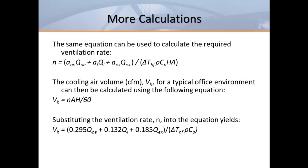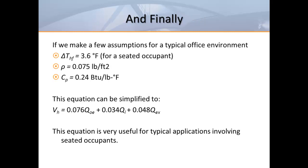We can also rearrange the equation to solve for the air change rate. If we know the air change rate, then it's a simple matter to calculate the air volume. Then rearranging the equation again, we finally have an equation to calculate the cooling volume requirement. If we make a few assumptions that would be appropriate for a typical office environment, we can further simplify the equation. At last, we have a simple equation that we can use to calculate cooling airflow volume to handle the effect of the total heat load on the occupied zone.